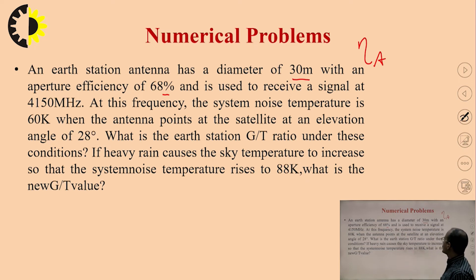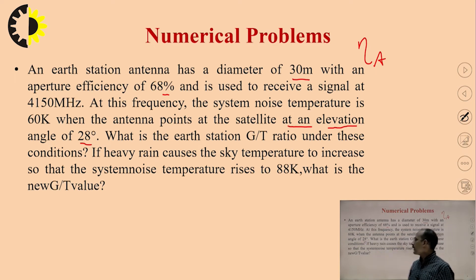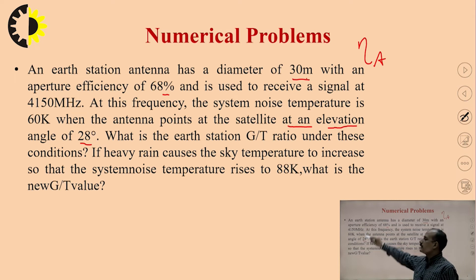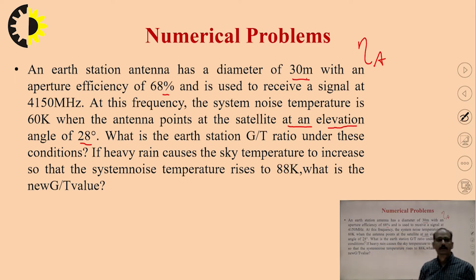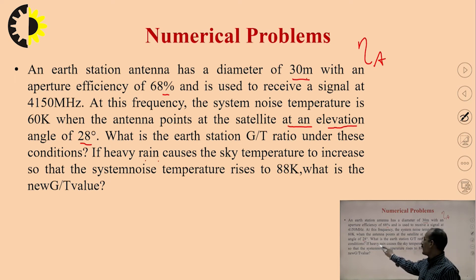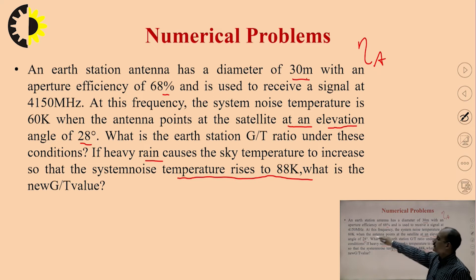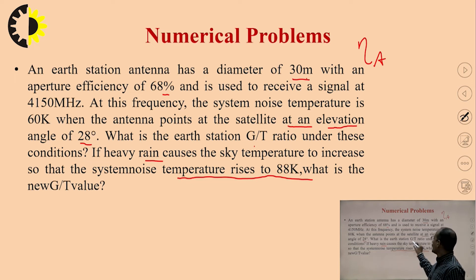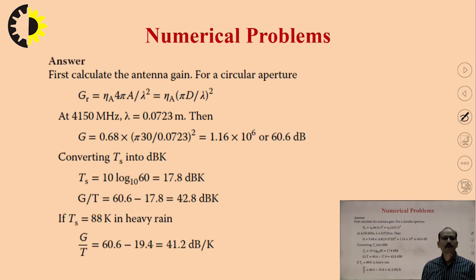At this frequency, the system noise temperature is 60 K when the antenna points at the satellite at an elevation angle of 28 degrees. So the given values are: diameter = 30 m, aperture efficiency = 68%, frequency = 4150 MHz, system noise temperature = 60 K, elevation angle = 28°. What is the earth station G/T ratio under these conditions? The second part asks: if heavy rain causes the sky temperature to increase so that the system noise temperature rises from 60 K to 88 K, what is the new G/T ratio?